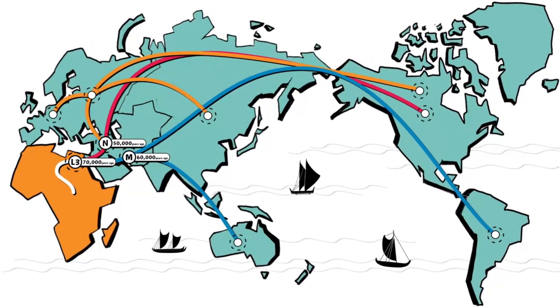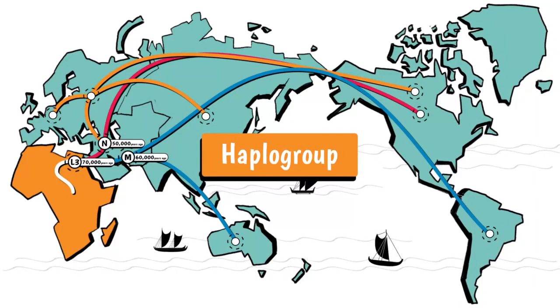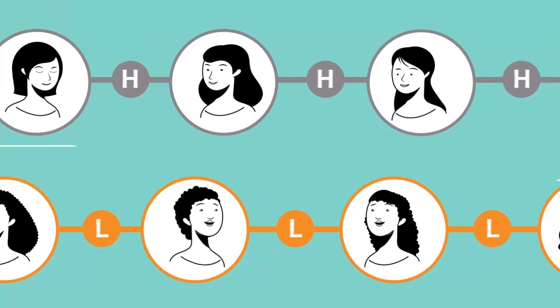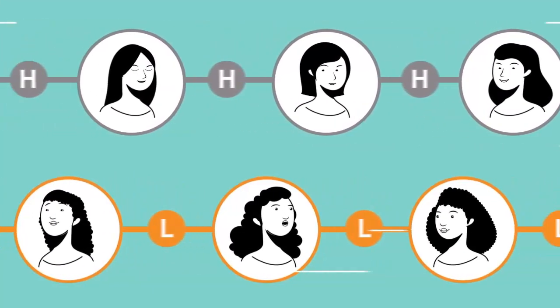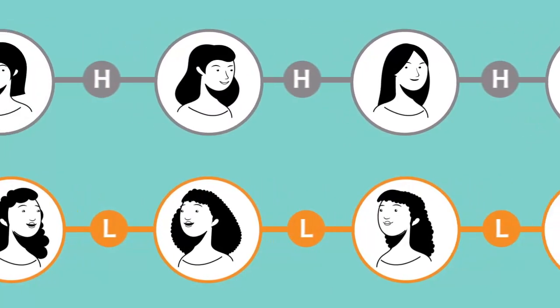A branch of this tree is called a haplogroup. Haplogroups differ from each other by a varying number of tiny changes, referred to as mutations.